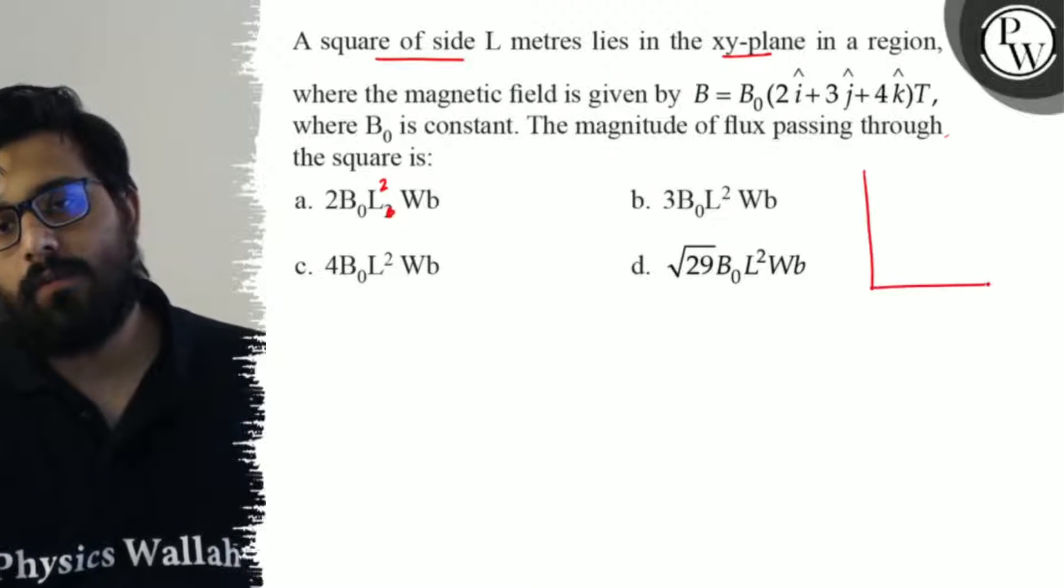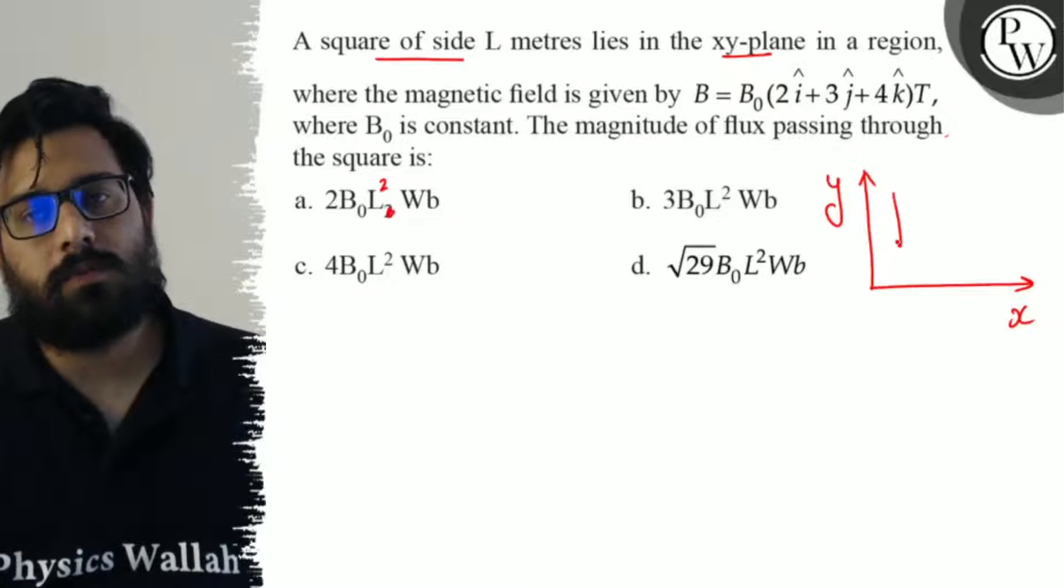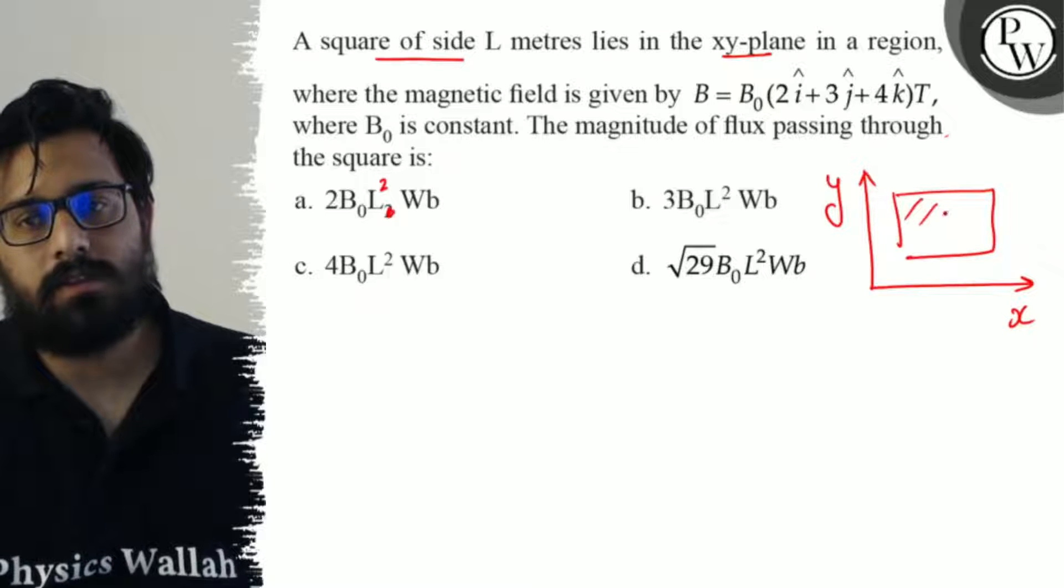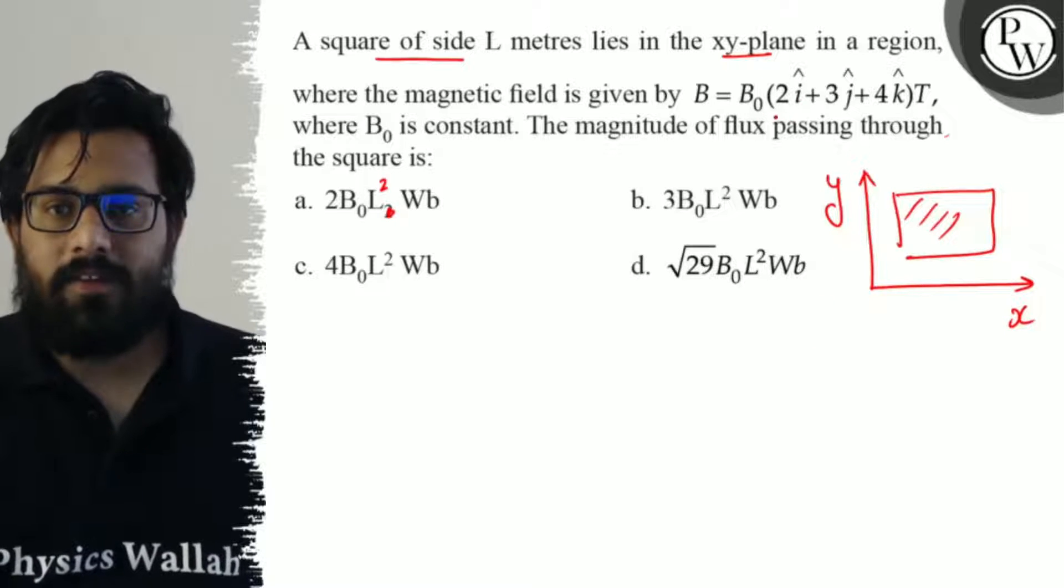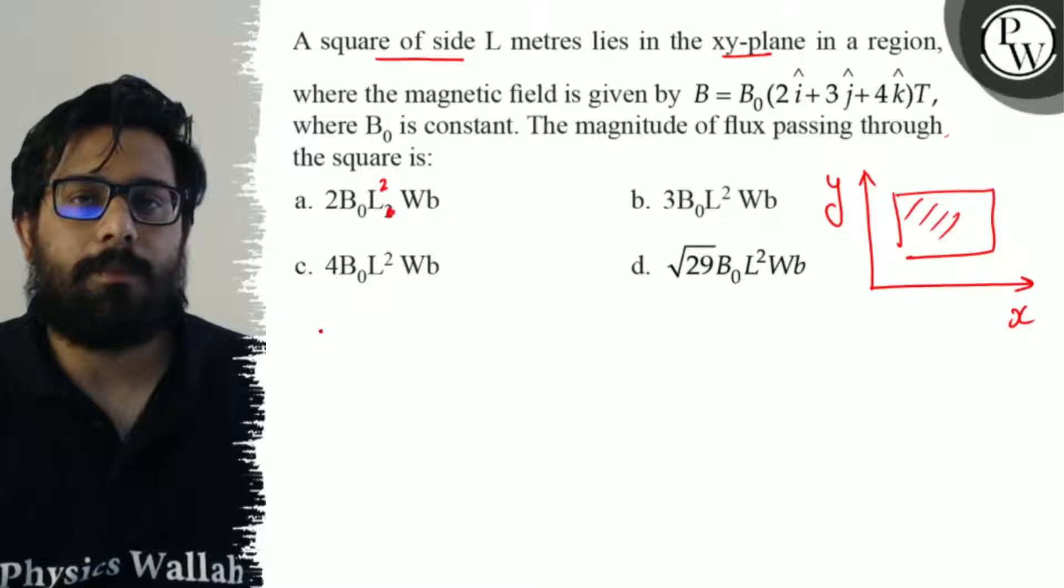So the square is lying in the xy-plane, so let us draw the xy-plane first. This is your xy-plane and you have a square. Magnetic field is B₀(2î + 3ĵ + 4k̂).